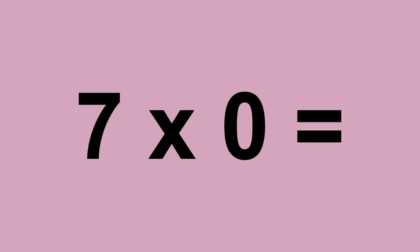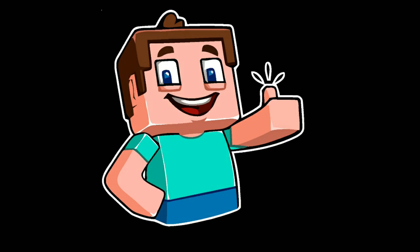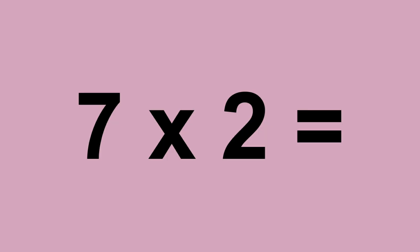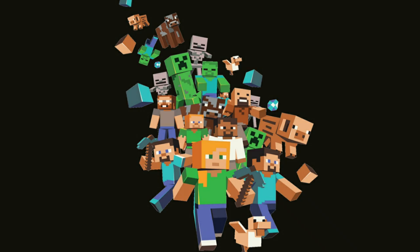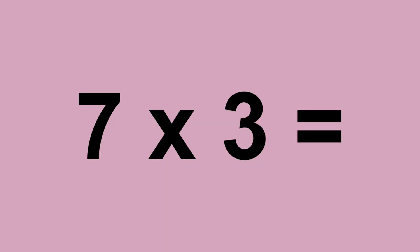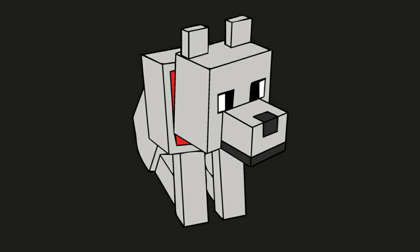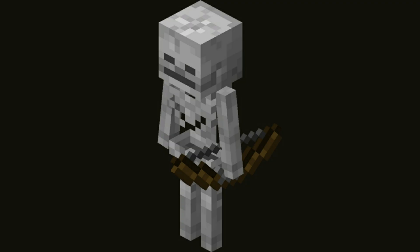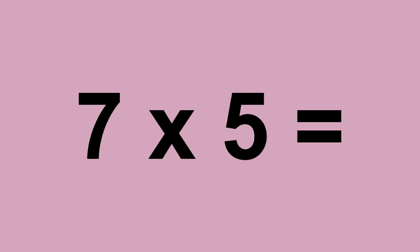7 times 0 equals 0. 7 times 1 equals 7. 7 times 2 equals 14. 7 times 3 equals 21. 7 times 4 equals 28. 7 times 5 equals 35.